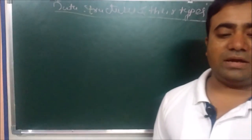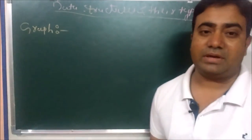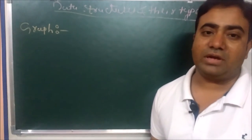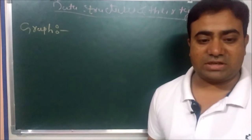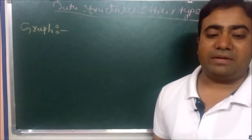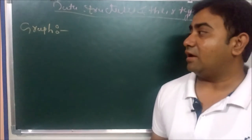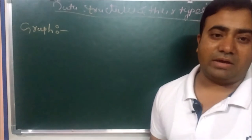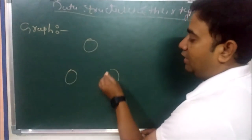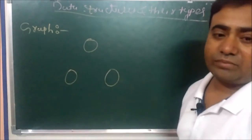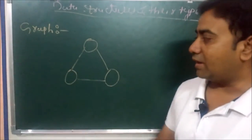Now we discuss graph. Graph is also a non-linear data structure because it does not maintain linearity or sequence. When our data is stored and follows a route, that is called a graph. We store data in nodes and follow routes between them.